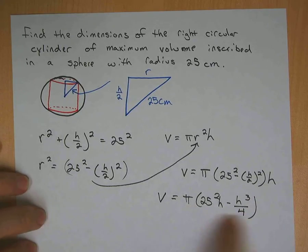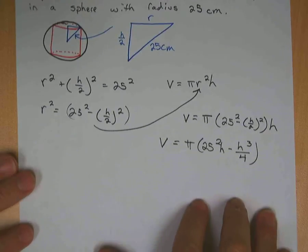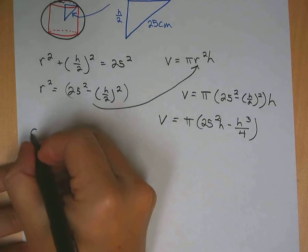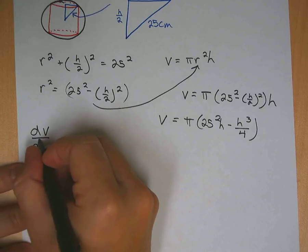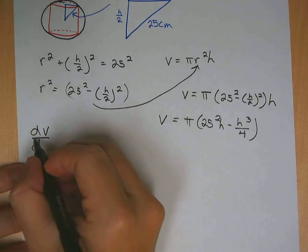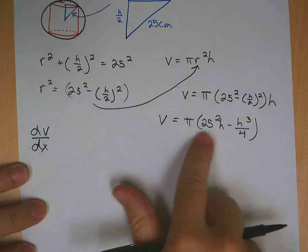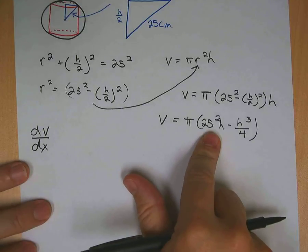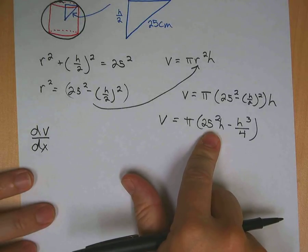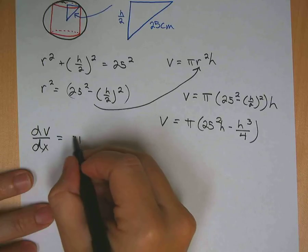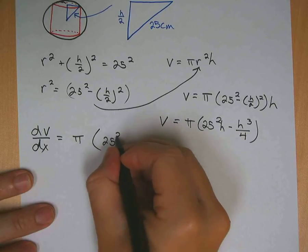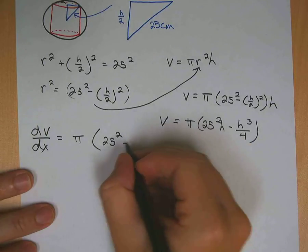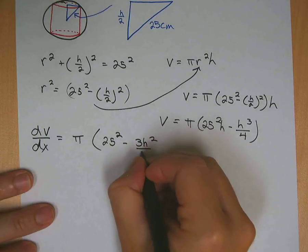So I've got this in terms of just H instead of H and R now. I'm going to go ahead and take that derivative, dV/dx. So we take this derivative and that's going to be pi, it's constant on the outside. 25 squared, dV/dx goes away, minus 3H squared over 4.